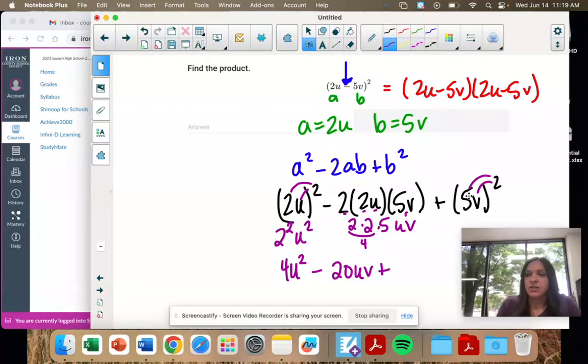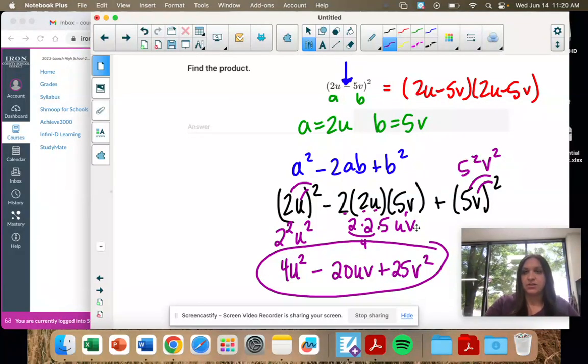And then plus, this is 5 squared v squared. 5 times 5 is 25 and then v squared. So that's our answer.